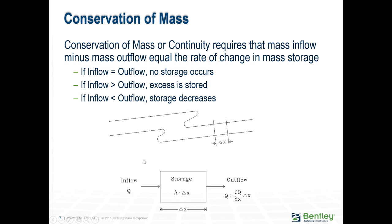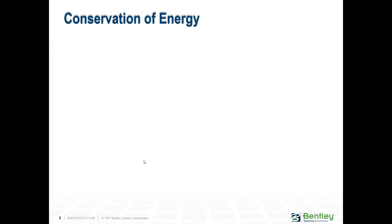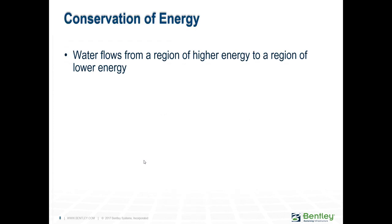We would also have the situation, for example, at a manhole, where we have flow coming in from the upstream manhole and then we have additional flows coming in there. So it's just A plus B has to equal C. Everything that comes in has to be equal to what comes out. If there's a difference, it's because it is being stored at that particular manhole.